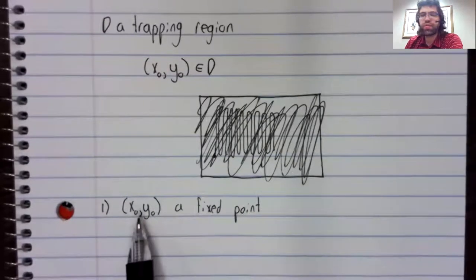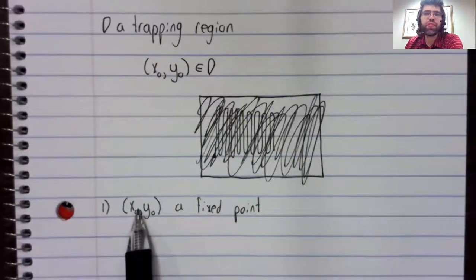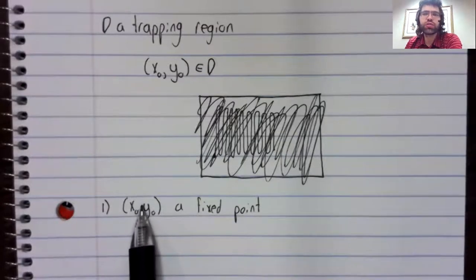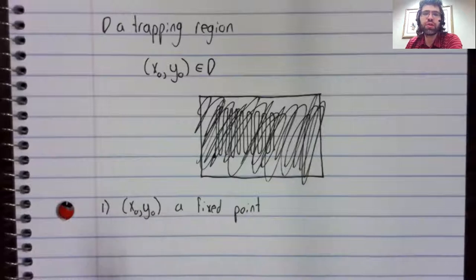Well, first of all, this could be a fixed point. Then as time passes, the trajectory sits forever at the fixed point.